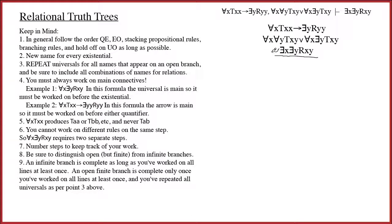Looking at this, I see an opportunity to do quantifier exchange. Quantifier exchange and existential-out are always a good place to start because they help get the quantifiers out of the way and they are stacking rules — they don't involve a branch. I can do both quantifier exchanges at the same time because it's the same rule applied twice.